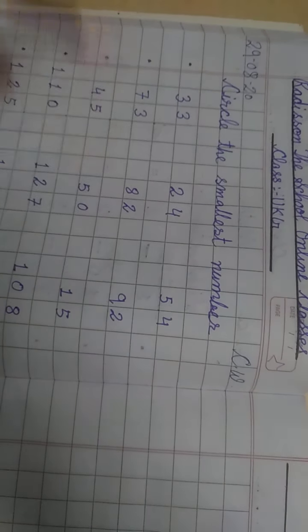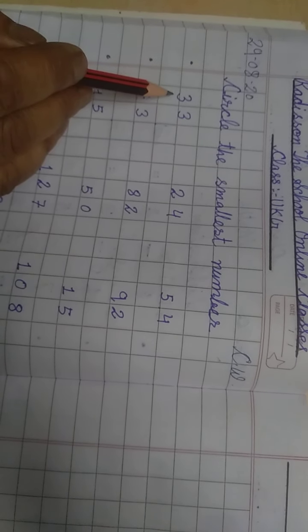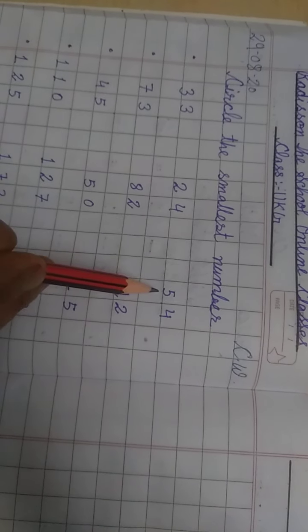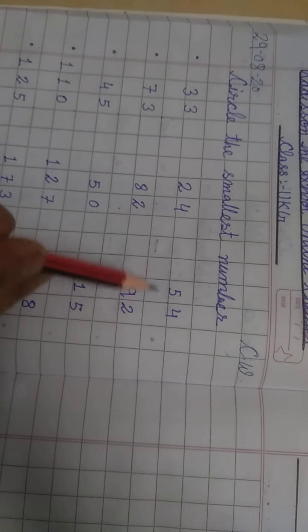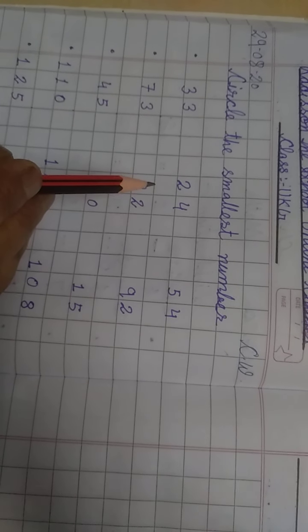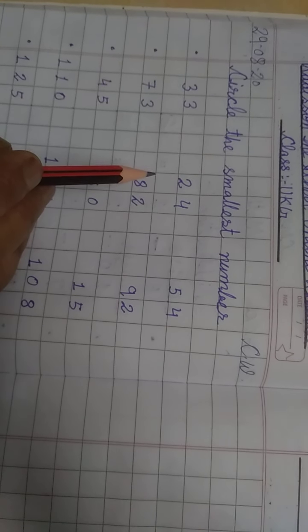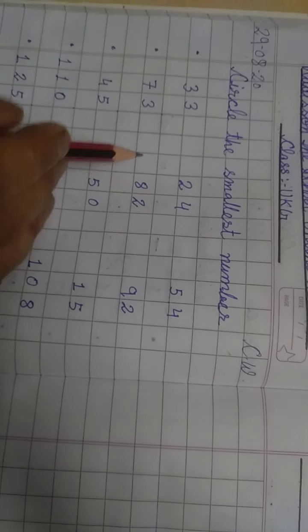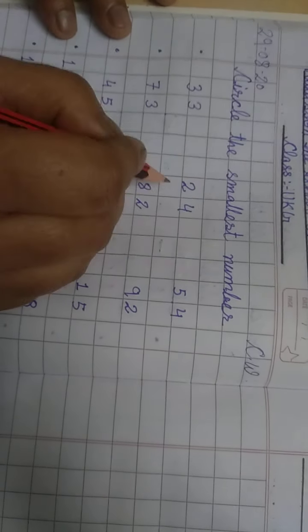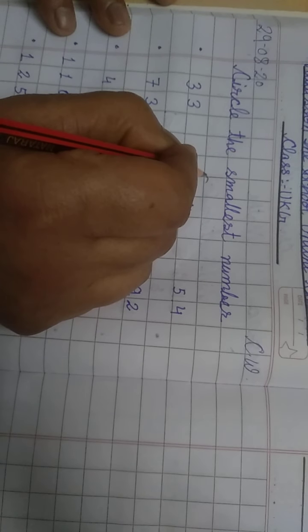Like 33, 24 and 54, इन में से कौन से number सबसे छोटा है? जो number पहले बोलते है 1 से 100 तक, जब counting करोगे जो number पहले आता है वो सबसे छोटा number होता है। तो 1 से 100 जब counting करोगे कौन से number आएगा पहले? 24 आएगा, तो 24 is the smallest.